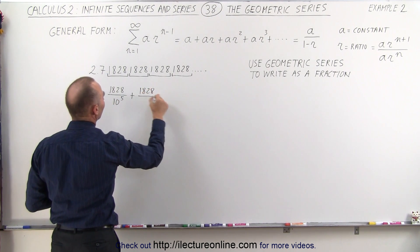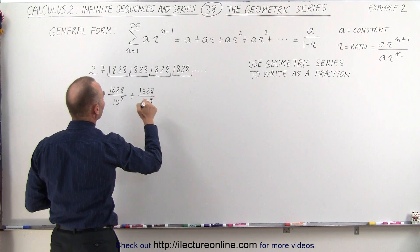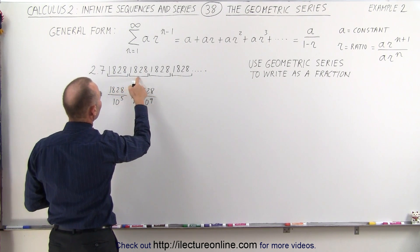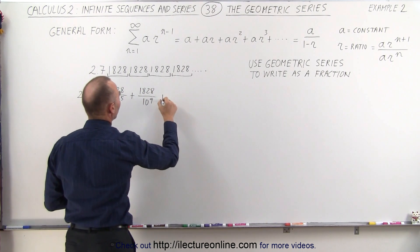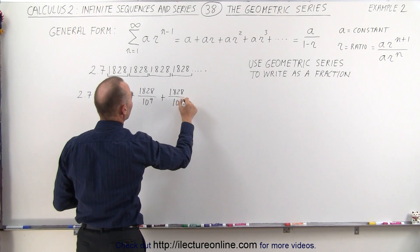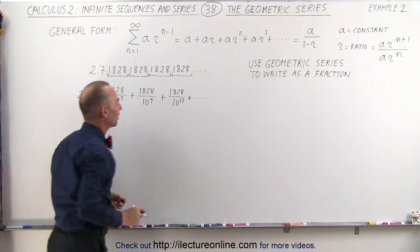Plus 1828 divided by 10 to the 9th, because notice that's 1, 2, 3, 4, 5, 6, 7, 8, 9 decimal places, plus 1828 divided by 10 to the 13th, and I think you're beginning to see the pattern.